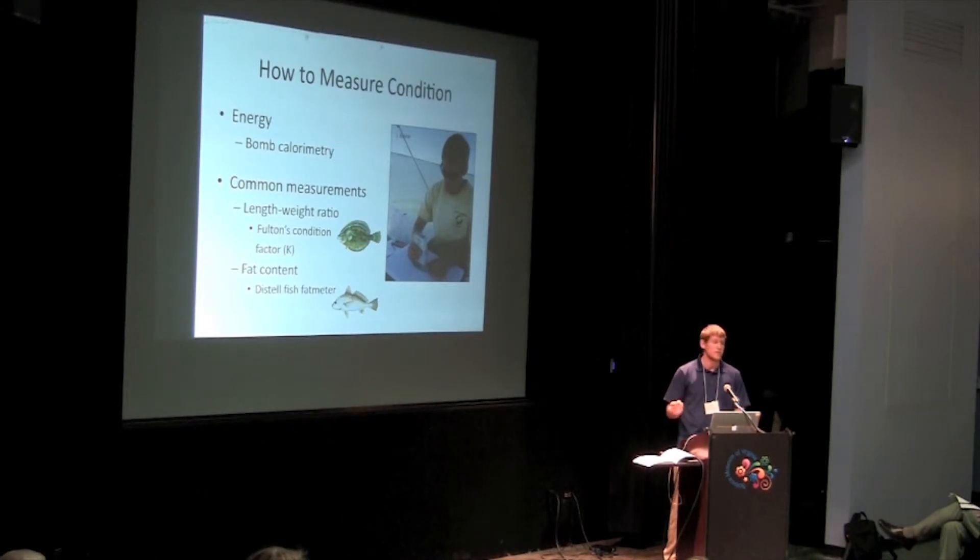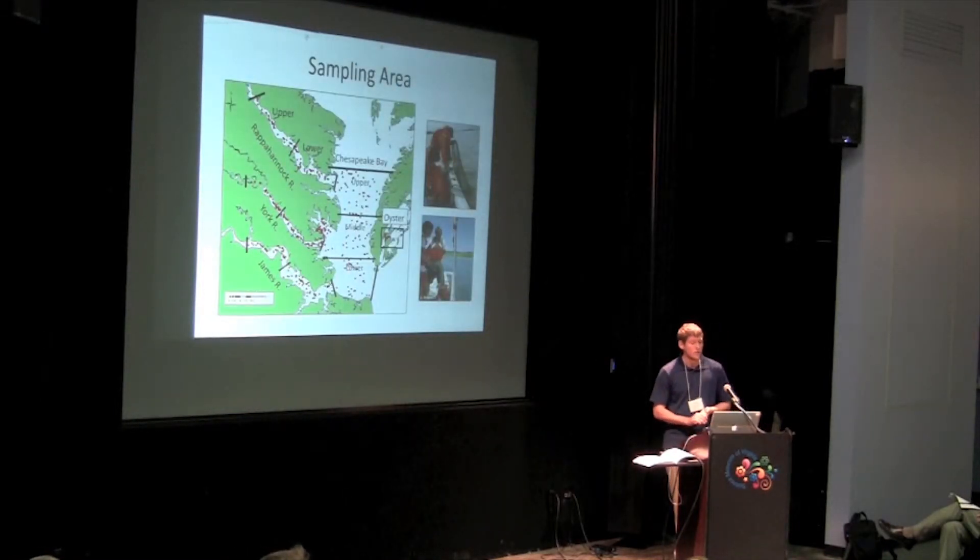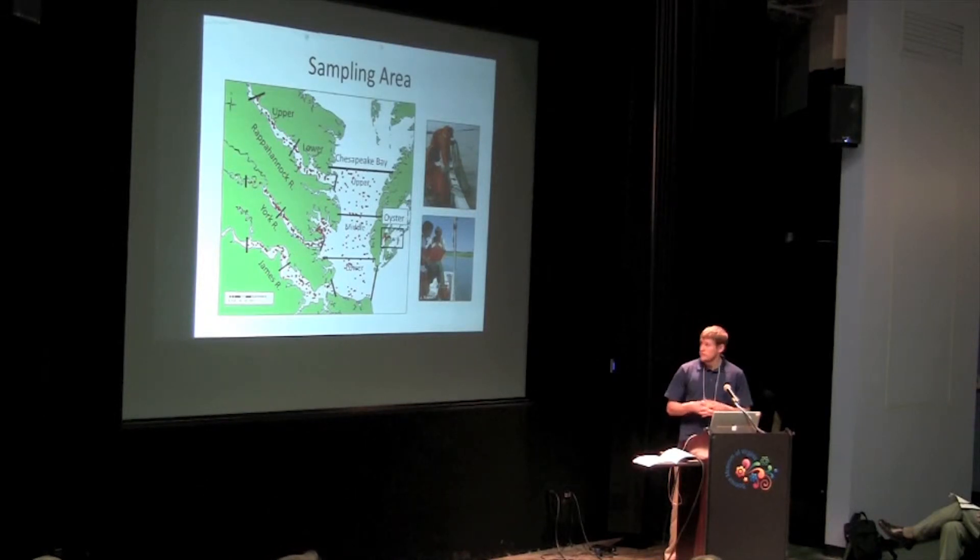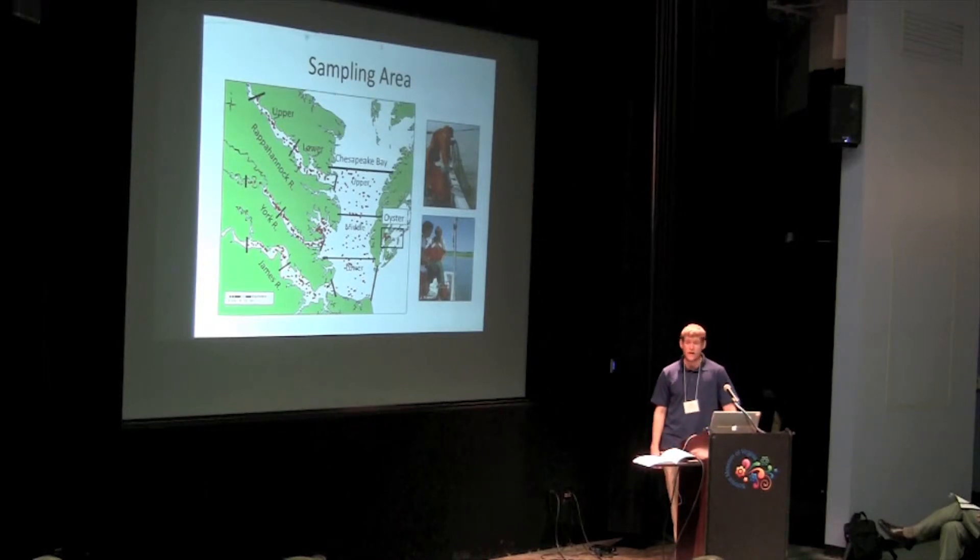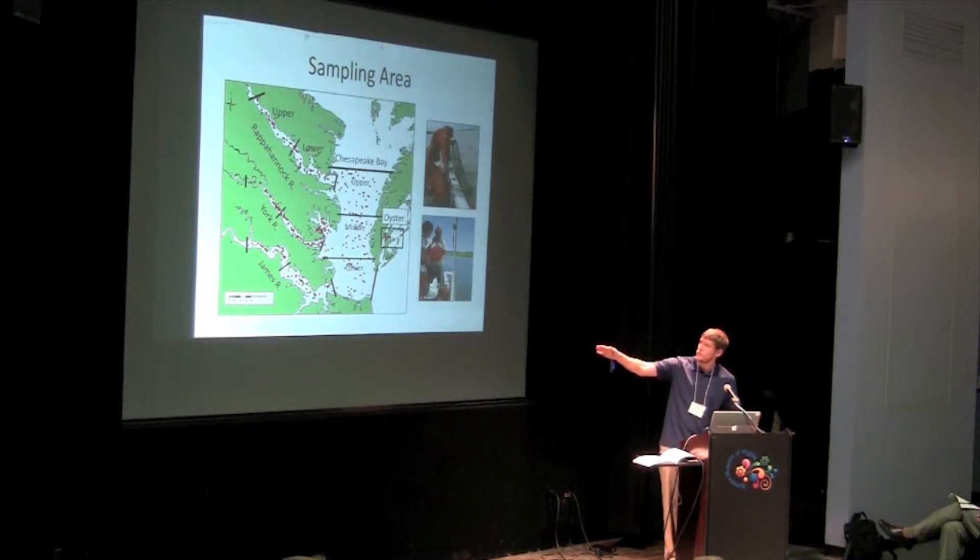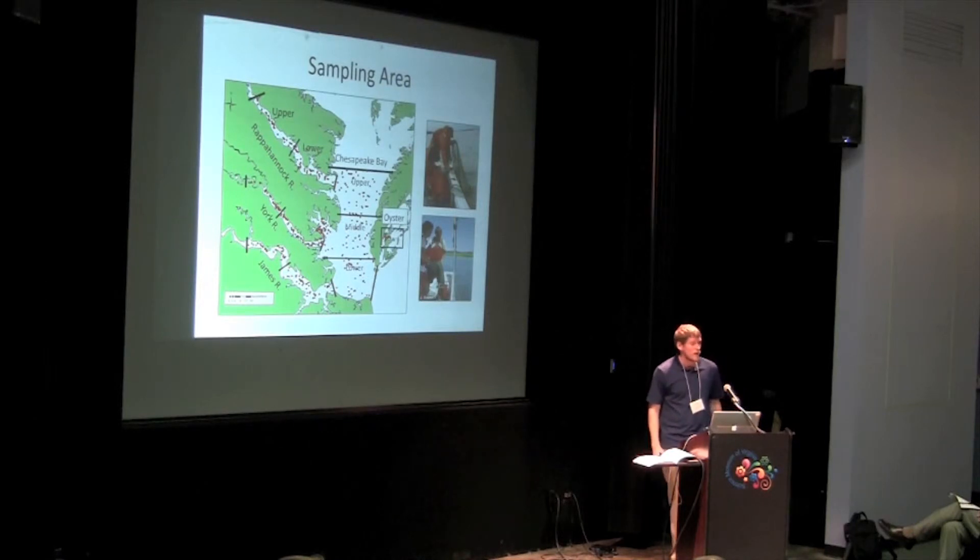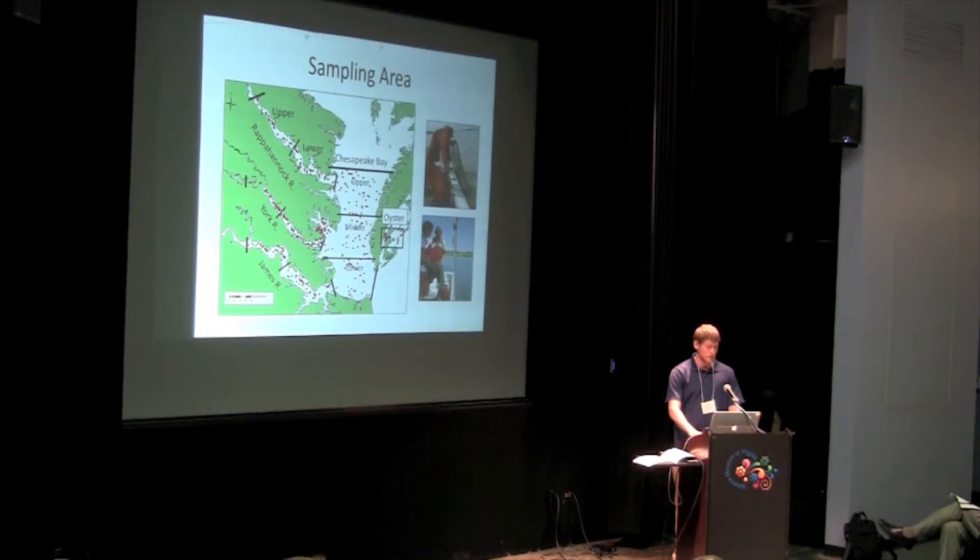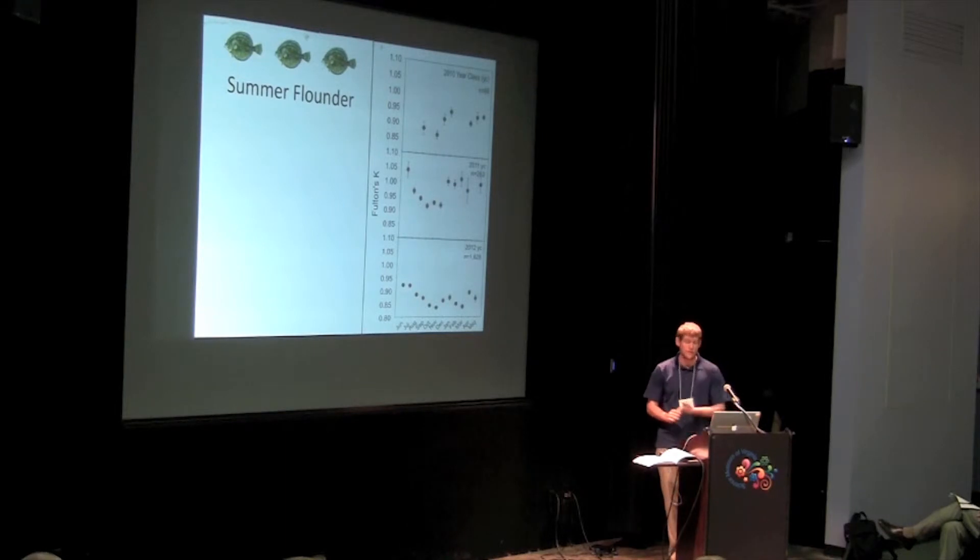So using these two measurements, we can then go out and look at trends in condition throughout the year in Virginia waters. In order to do that, we took many samples from random locations throughout Chesapeake Bay using the Juvenile Fish Trawl Survey at VIMS. We collected samples from two regions in the James River, York River, and Rappahannock Rivers, from three regions in the Chesapeake Bay, and we also collected fish from Oyster, Virginia, the coastal lagoons on the eastern shore.